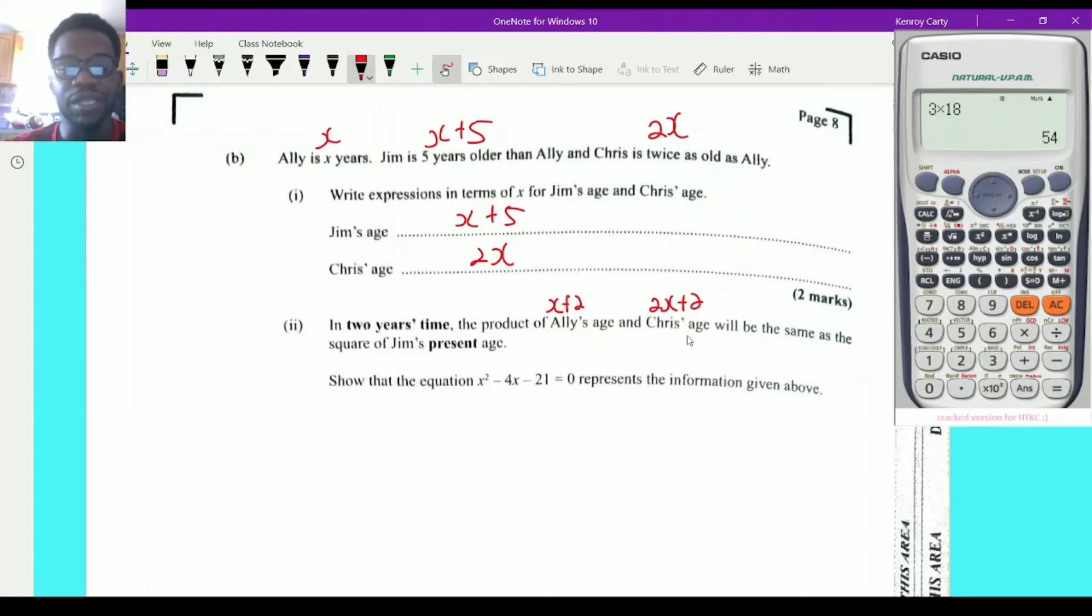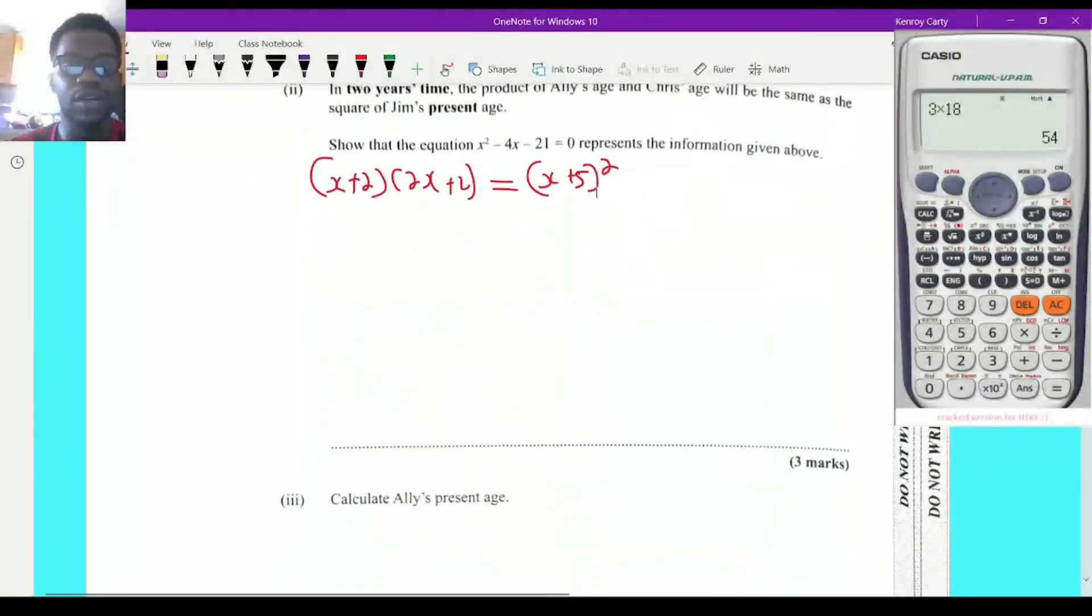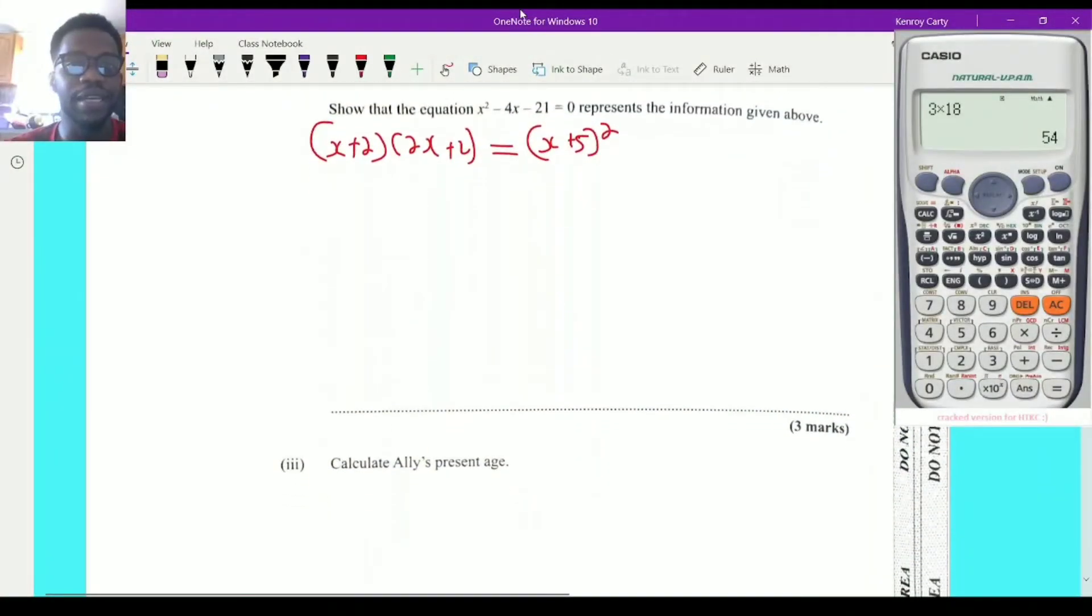So the product of Ali's age and Chris's age, now please remember that product means that we multiply. Now, because we have more than one part to the expression, we're going to have to put them in a bracket. So x plus 2 times 2x plus 2, and it says it's going to be equal, same in, it's the same thing as saying equal, the square of Jim's present age. That means how much Jim is now before the two-year time, which is x plus 5 all squared. Now, they gave us an idea as to what the answer should look like. So all I need to do is work it down and get the same answer. So let's go.